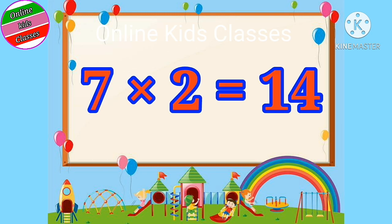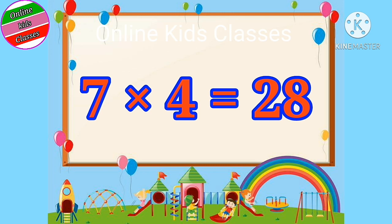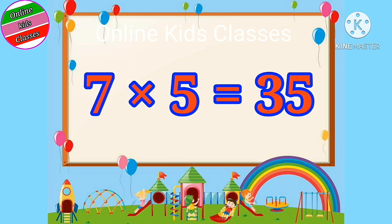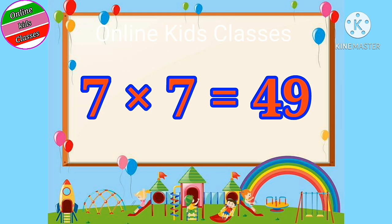Seven twos are fourteen. Seven threes are twenty-one. Seven fours are twenty-eight. Seven fives are thirty-five. Seven sixes are forty-two. Seven sevens are forty-nine.